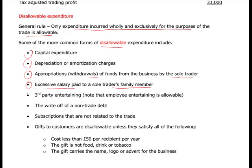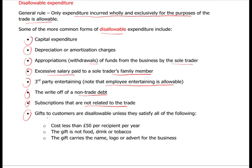Third-party entertaining - for example to potential customers - is disallowable. Note that staff entertaining is allowable. Writing off a non-trade debt is disallowable, as are subscriptions not related to the trade. Gifts to customers are disallowable unless they satisfy all of the following: they cost less than £50 per recipient, the gift is not food, drink or tobacco, and the gift carries the business name, logo or advertisement.